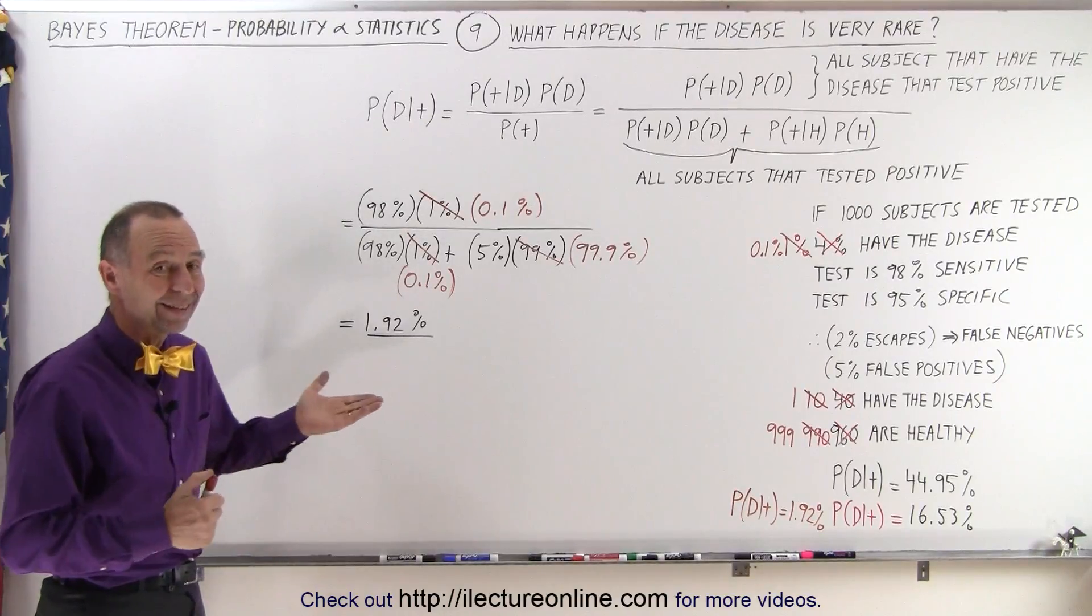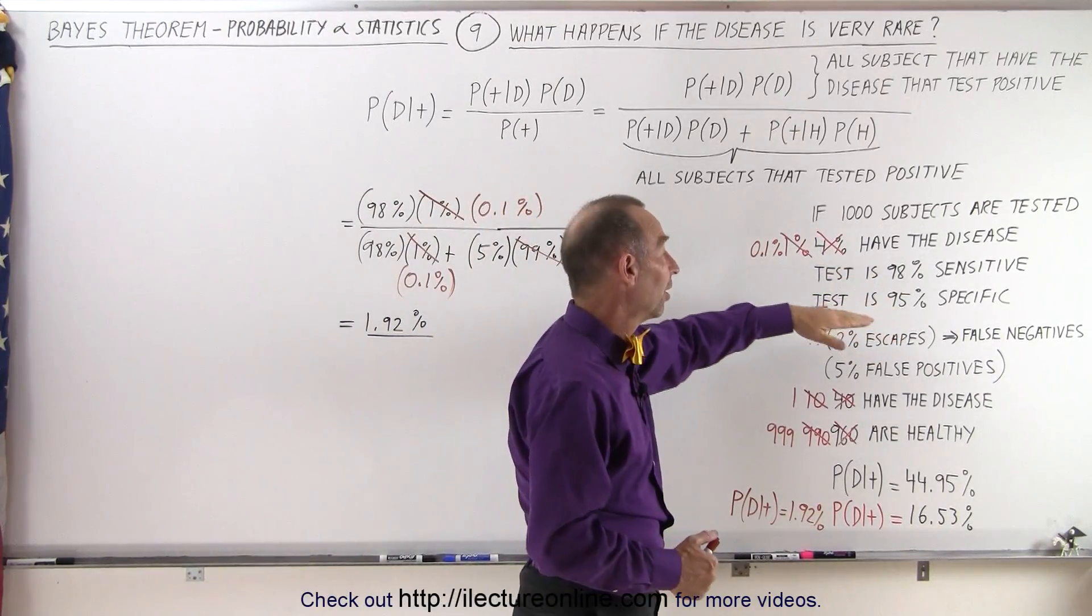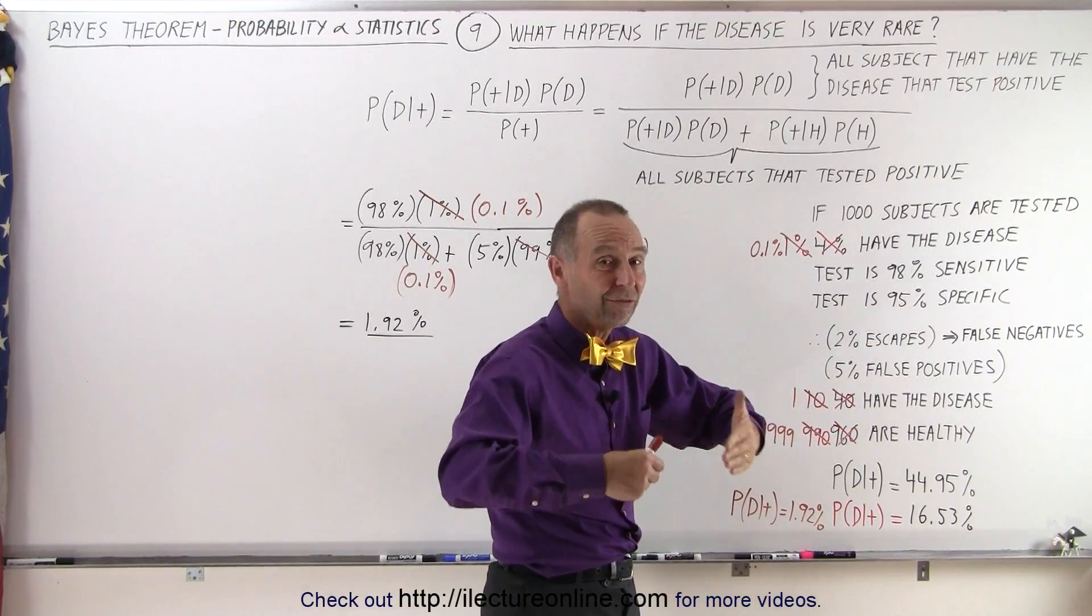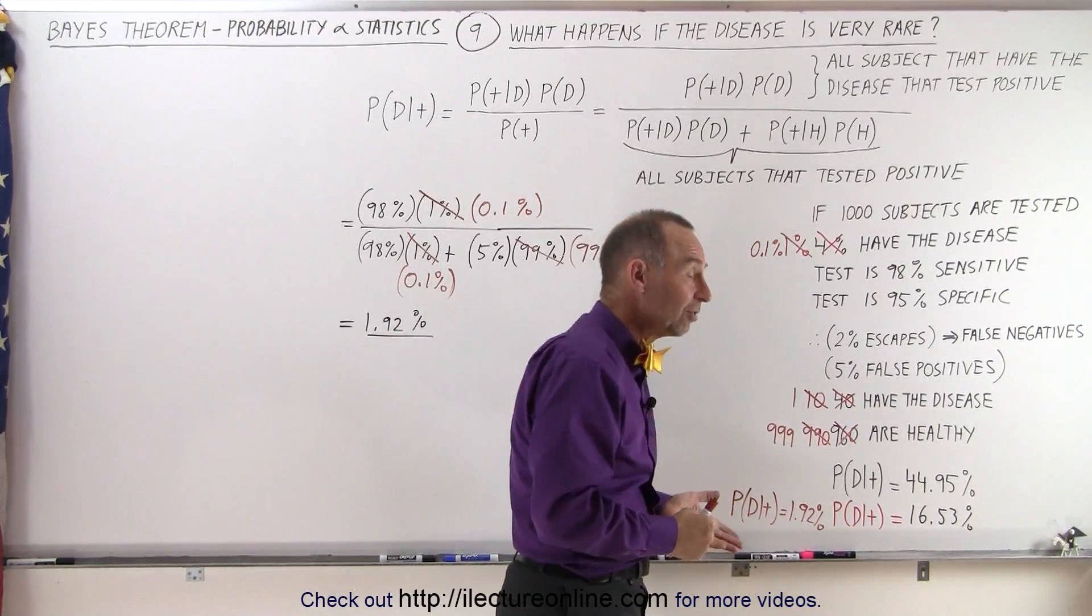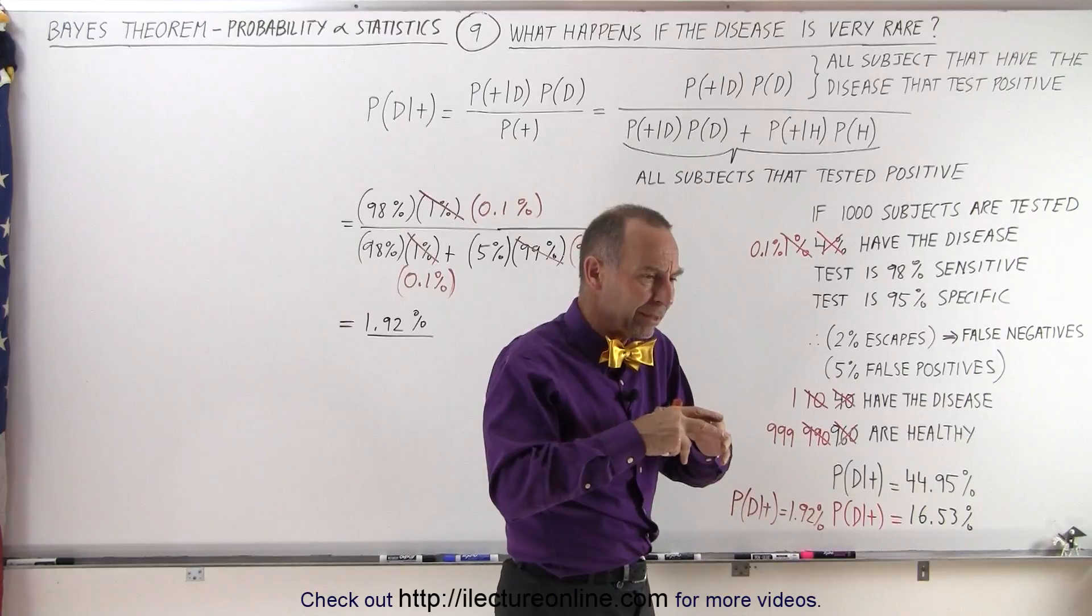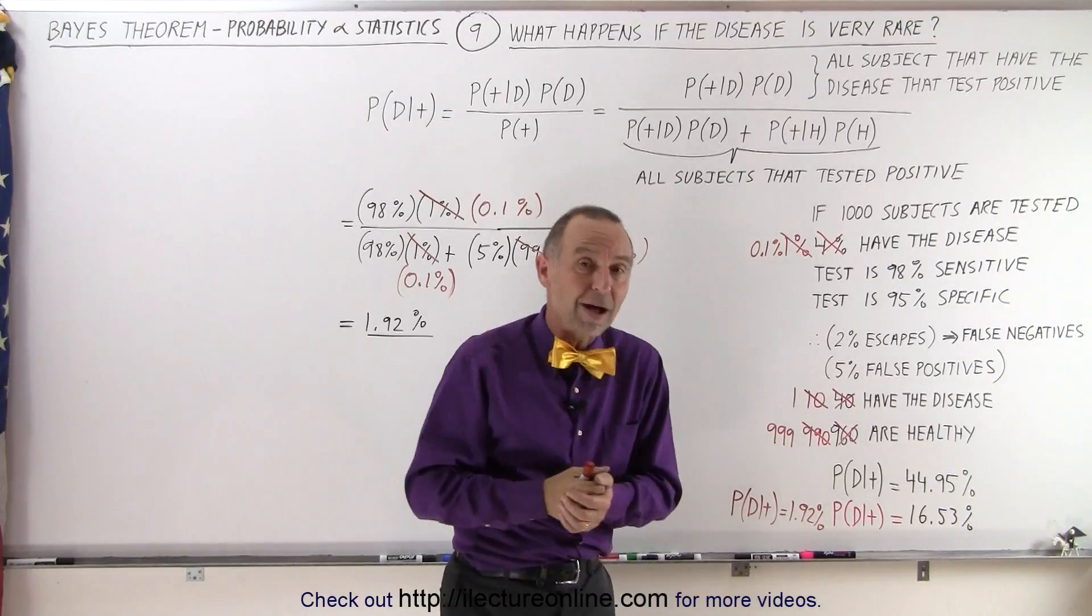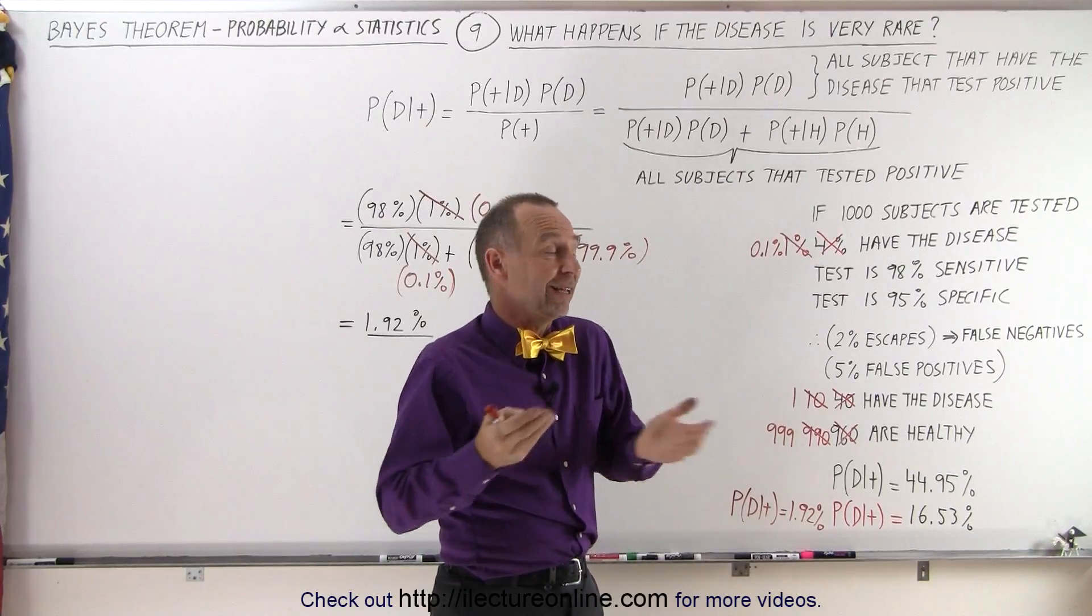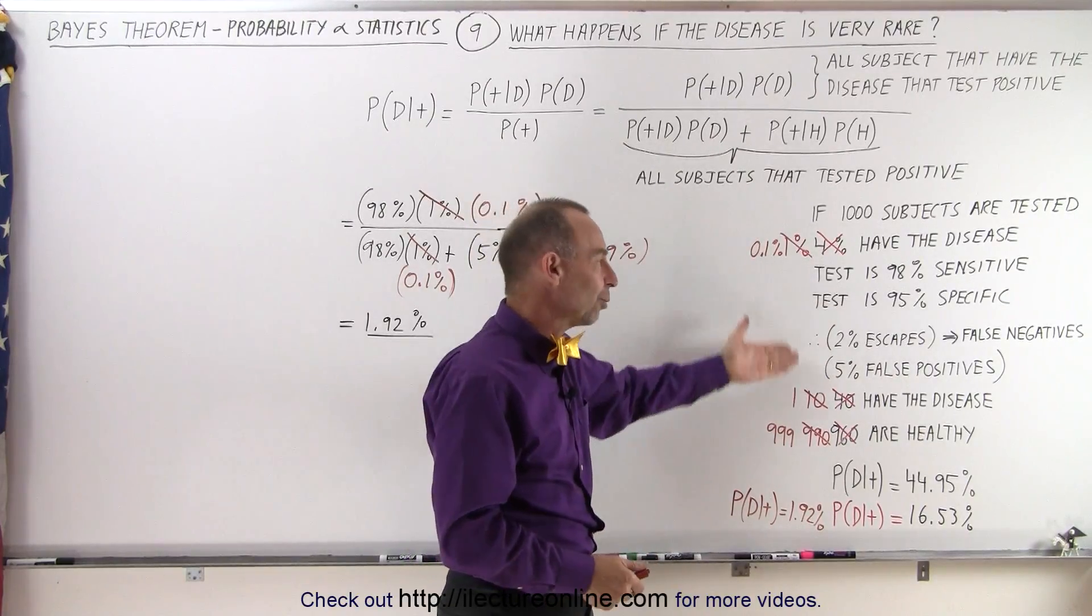What does it imply? When you're testing for conditions which are very rare, you need to have testing parameters that are much better, especially the specificity. With only 95% specificity, what that means is there's a very large percentage, 5%, that you can get false positives. And even though there's many healthy subjects, that means you're going to get a lot of readings that are positive even though they're healthy. So the number of people that have false positives that are healthy far outnumber the people that have the disease that show a positive. And therefore, the probability that the one that has a positive result actually does have the condition is much, much lower because there's so many that are false positives.